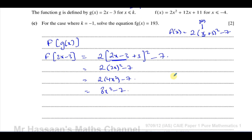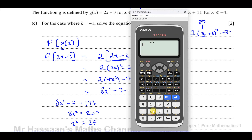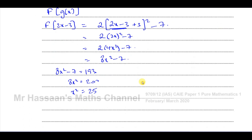Setting f(g(x)) equal to 193: 8x squared minus 7 equals 193, so 8x squared equals 200, so x squared equals 25, giving x equals plus or minus 5. However, since the domain of g requires x less than or equal to negative 1, we can only choose negative values.